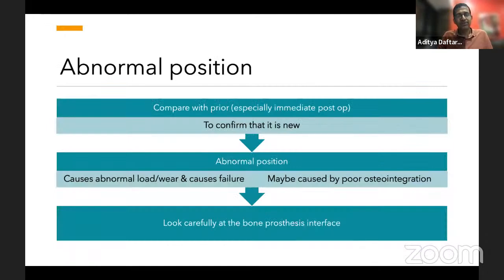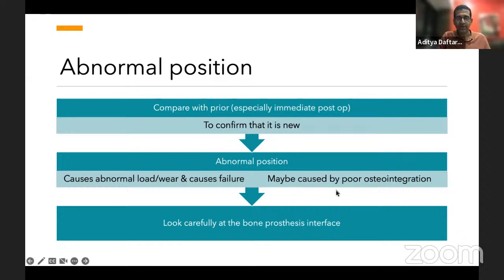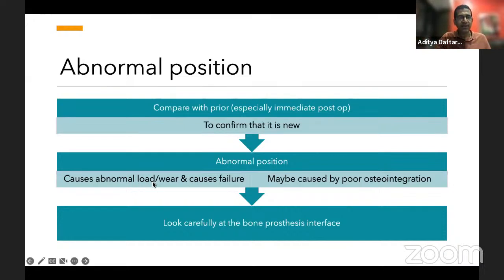When you see abnormal position, compare it with the priors — especially the immediate post-operative study. Abnormal position is usually caused by two things: A, poor osteointegration causing the prosthesis to migrate; or B, the prosthesis was placed abnormally, leading to abnormal loading patterns and ultimately prosthetic failure. Anytime you see abnormal position, look for signs of prosthetic failure at the bone-prosthesis or cement-prosthesis interface.